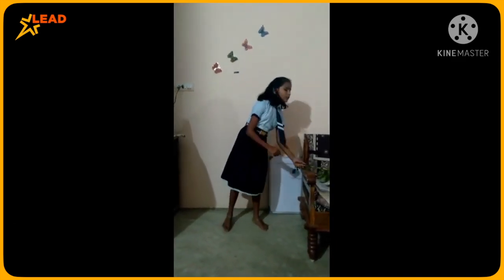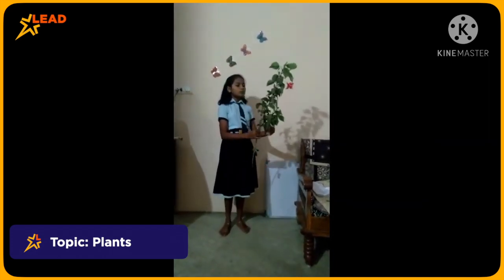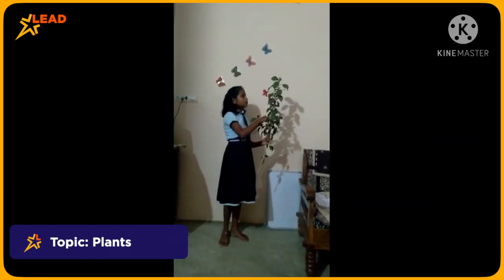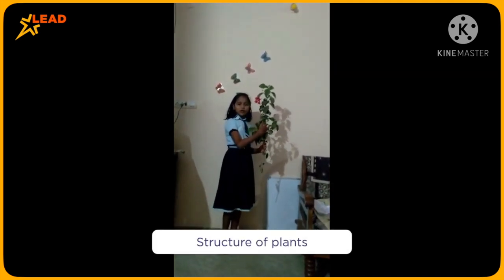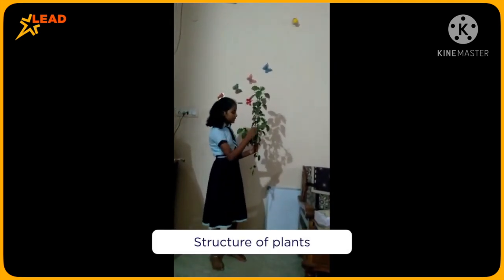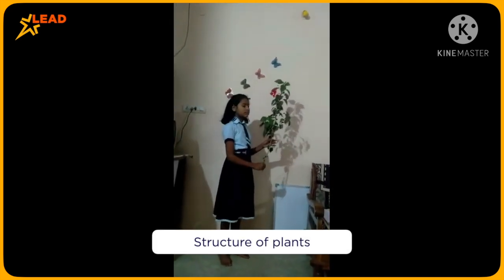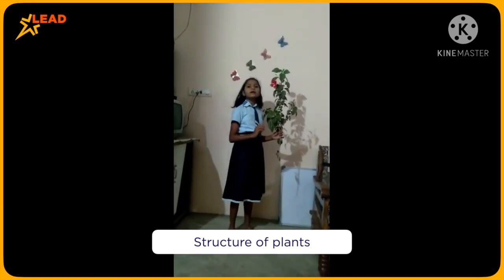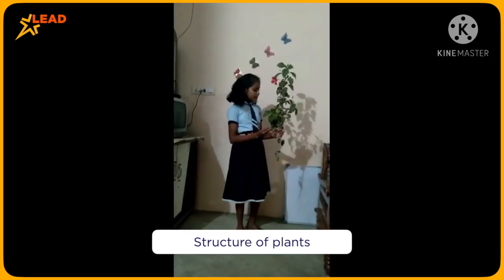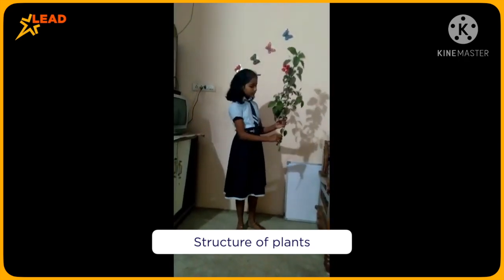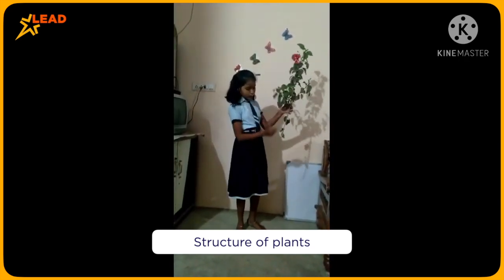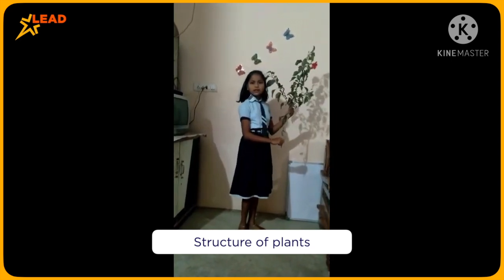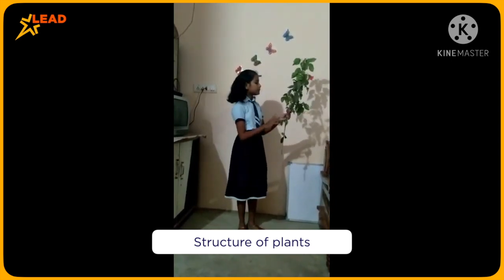Today's topic is know more about the plants. This portion is called the shoot system and this portion is called the root system. The shoot system consists of leaves, stems and the flower, and the root system consists of the roots.